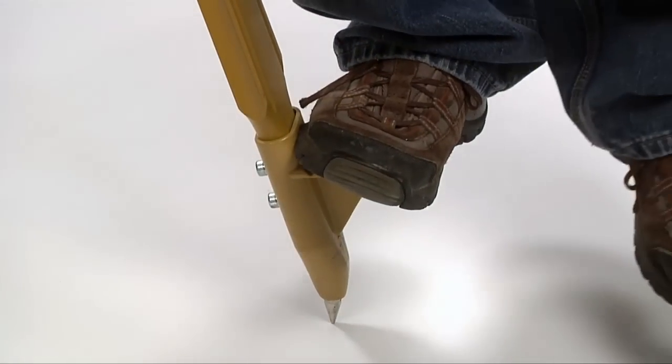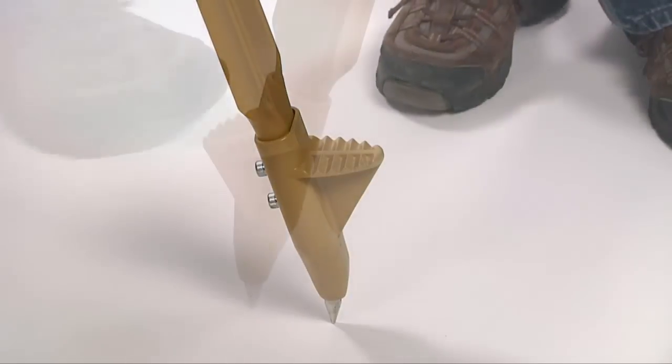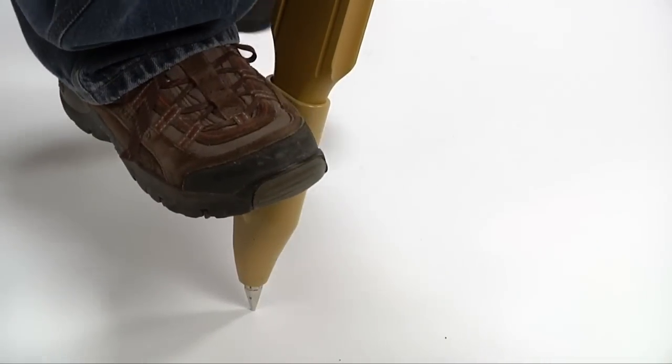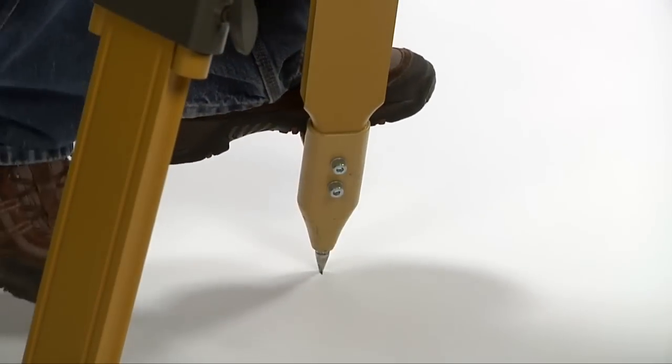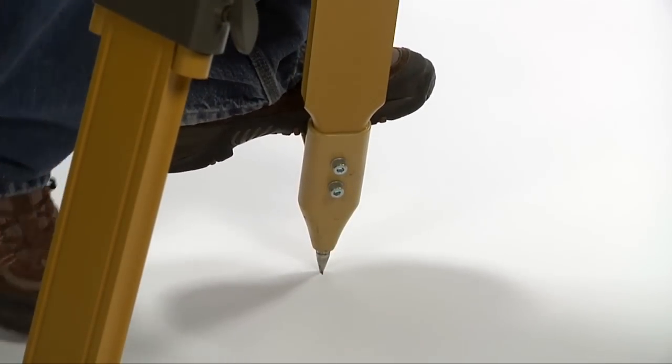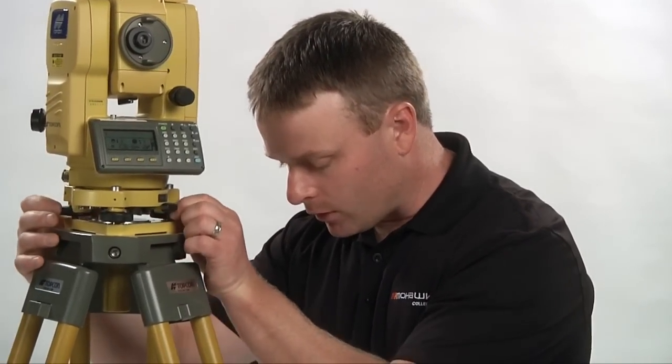Now step in all three foot pegs firmly into the ground. The action of stepping in the foot pegs will throw you off center. Use the foot screws to re-center the laser plummet.